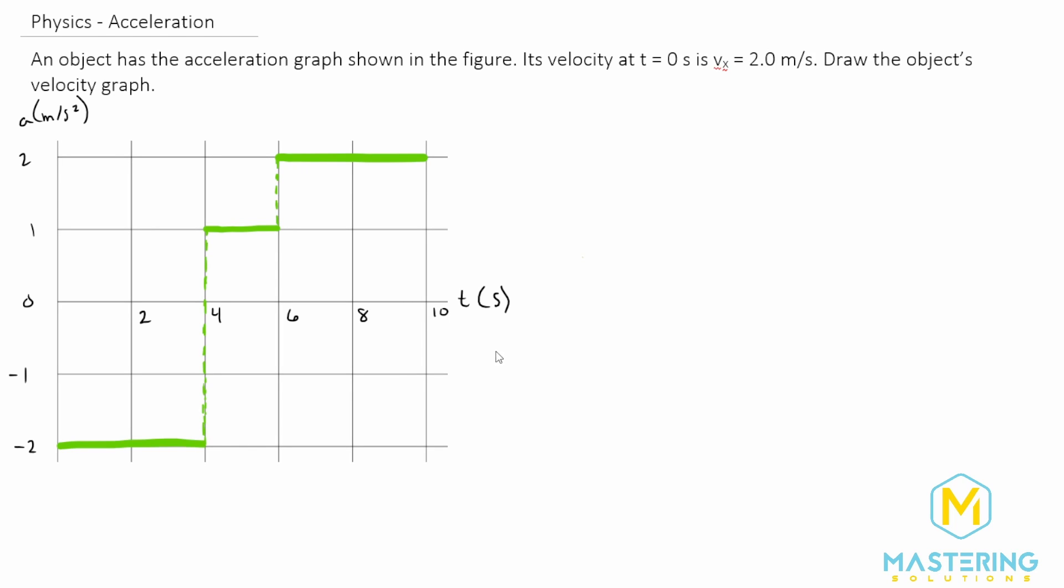Welcome to Mastering Solutions. In this problem they give us an acceleration versus time graph and then they say what is the velocity graph. We have to watch out on this one because they tell us that it starts out at 2 meters per second right off the bat.